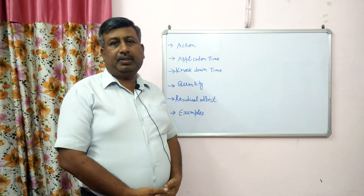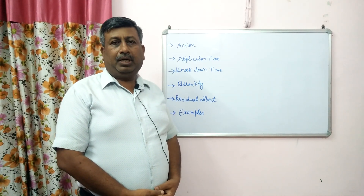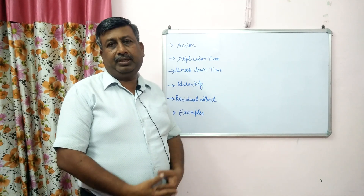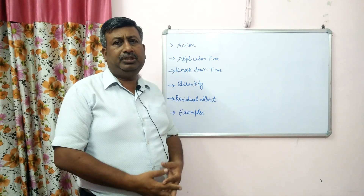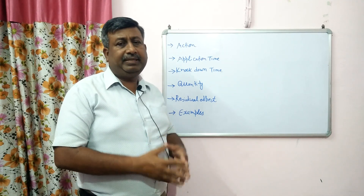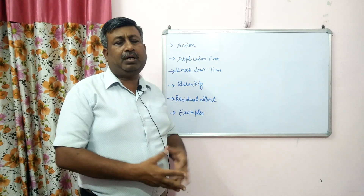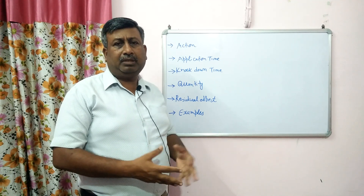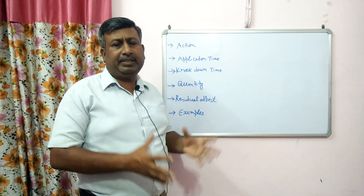Hello friends, I'm Dr. Amir Bhatnagar, working as Senior Research Officer in the Department of Agronomy at GB Pant University of Agriculture and Technology, Pantnagar, Uttarakhand. What is the basic difference between contact and systemic herbicides? Why do we use these two different types of herbicide? Herbicides are classified on different bases: selective, non-selective, contact, systemic, pre-emergence, and post-emergence.